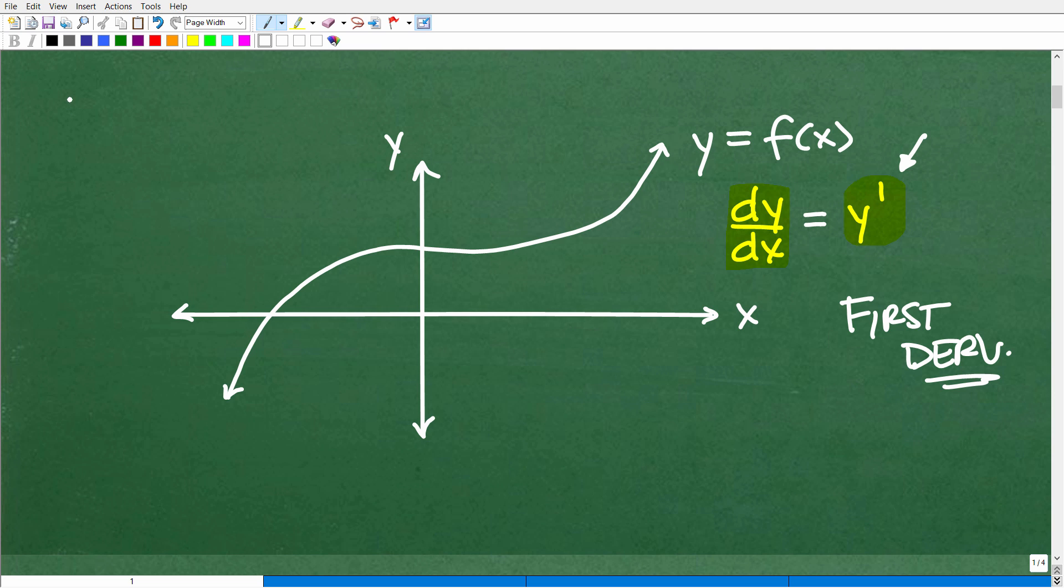So in calculus, we have this thing called an integral. We kind of think of this as finding the area underneath a curve. Like right here we have a curve and if we wanted to find the area underneath it, we would use this integral symbol. Again, I have additional videos on this in my playlist, but we're using this symbol. Now we're talking about this. This is the other half of calculus, this dy dx, and this is the derivative.